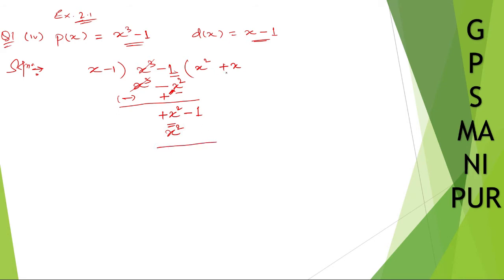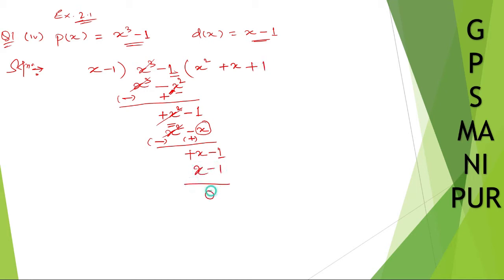Minus 1 into x will be minus x. Change the sign: minus will become plus, plus will become minus, and this one will cancel again. So minus 1 minus x — write this one first, which is plus x. Write the new sign: minus 1. Now x minus 1 into x minus 1 — so 1 here, x minus 1, and the remainder is 0.